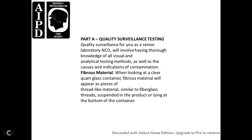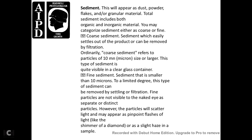Sediment appears as dust, powder flakes, and granular material. Total sediment includes both organic and inorganic material, and may be categorized as coarse or fine. Coarse sediment — particles of 10 microns or larger — is quite visible in a clear glass container and can be removed by filtration. Fine sediment — smaller than 10 microns — can be removed to a limited degree by settling or filtration. Very fine particles are not visible to the naked eye, but scatter light and appear as pinpoint flashes or a shimmer.